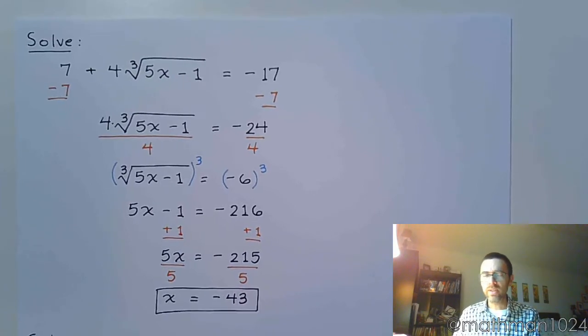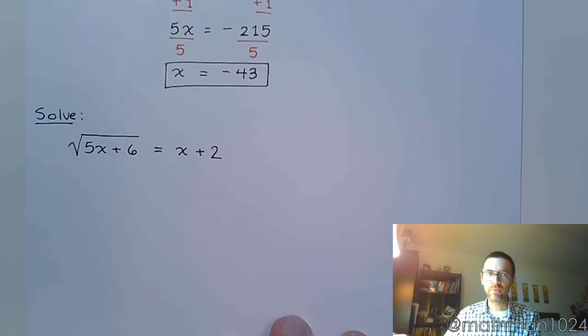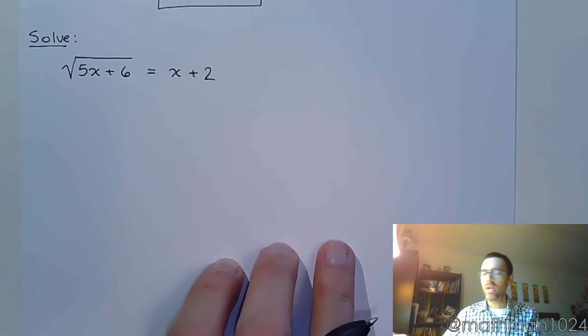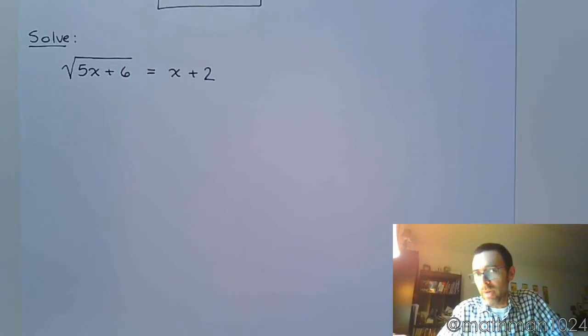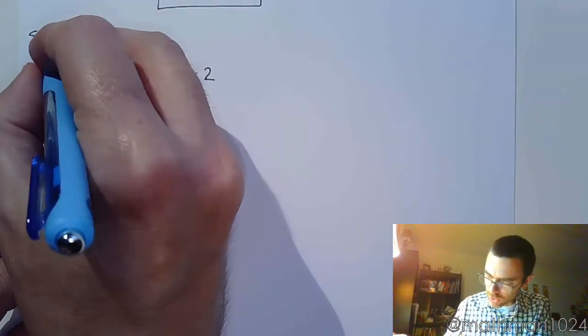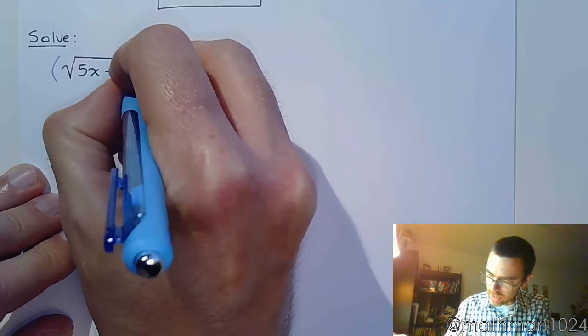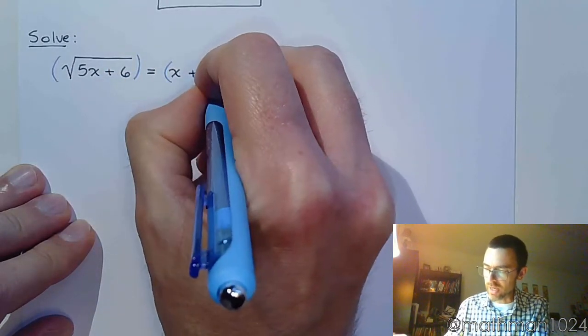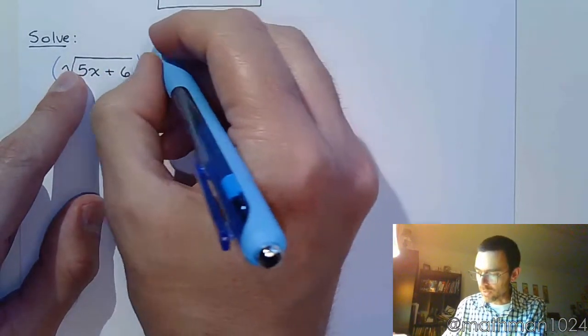All right, now let's take a look at the next problem that we have. So in this problem, the radical is already by itself. You only have a square root. That guy is already on the left side. And so now, we just need to apply the power property to undo that square root. And to undo the square root, we apply a power on both sides that will match the index. So that's going to be a 2.